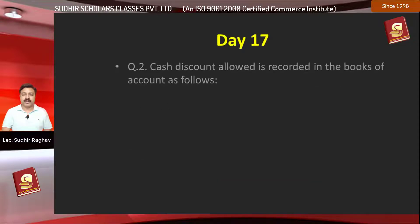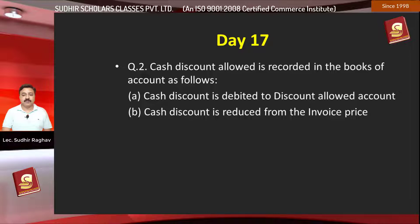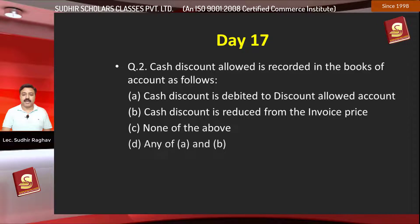Question number 2: Cash discount allowed is recorded in the books of account as follows. Option A, cash discount is debited to discount allowed account; Option B, cash discount is reduced from the invoice price; Option C, none of the above; Option D, any of A and B. The right answer is option A.